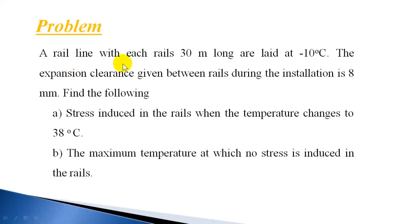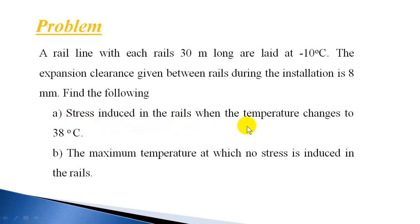A rail line with each rail 30 meters long is laid at minus 10 degrees centigrade. The expansion clearance given between rails during installation is 8 mm. Find the following: first, the stress induced in the rails when the temperature changes to 38 degrees centigrade; second, the maximum temperature at which no stress is induced in the rails.